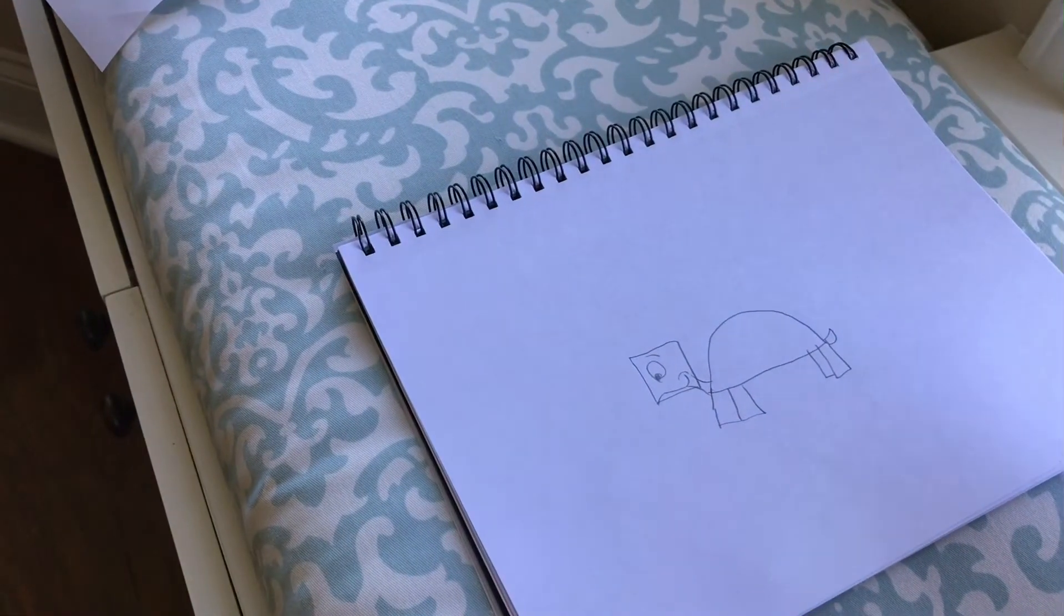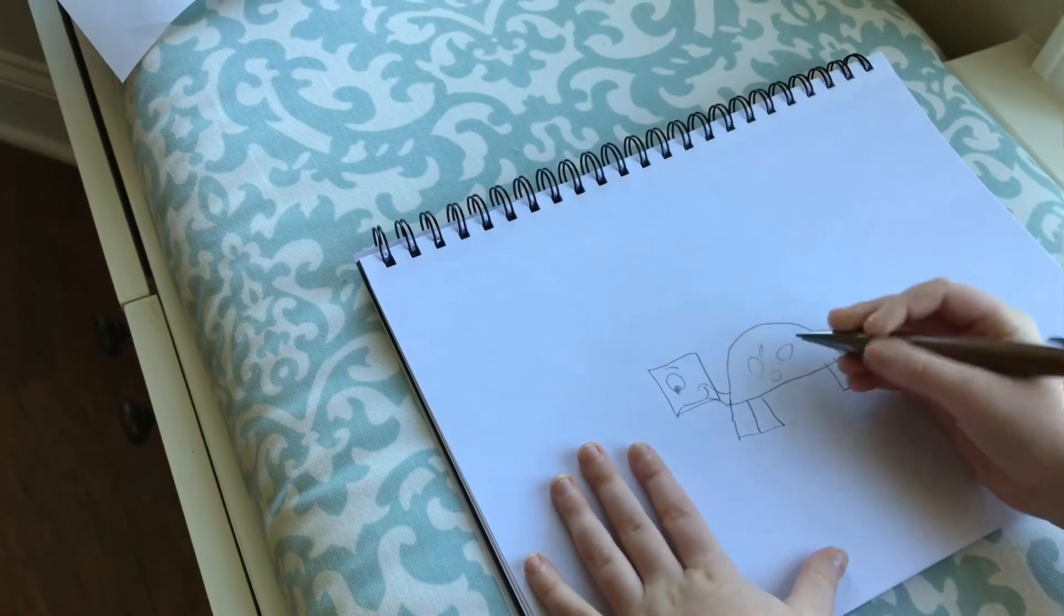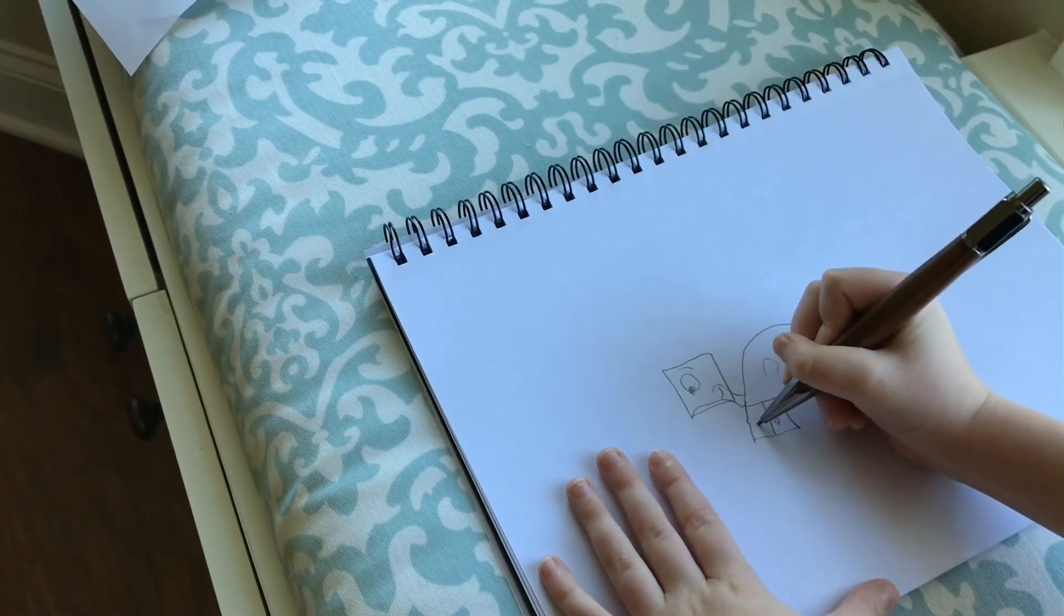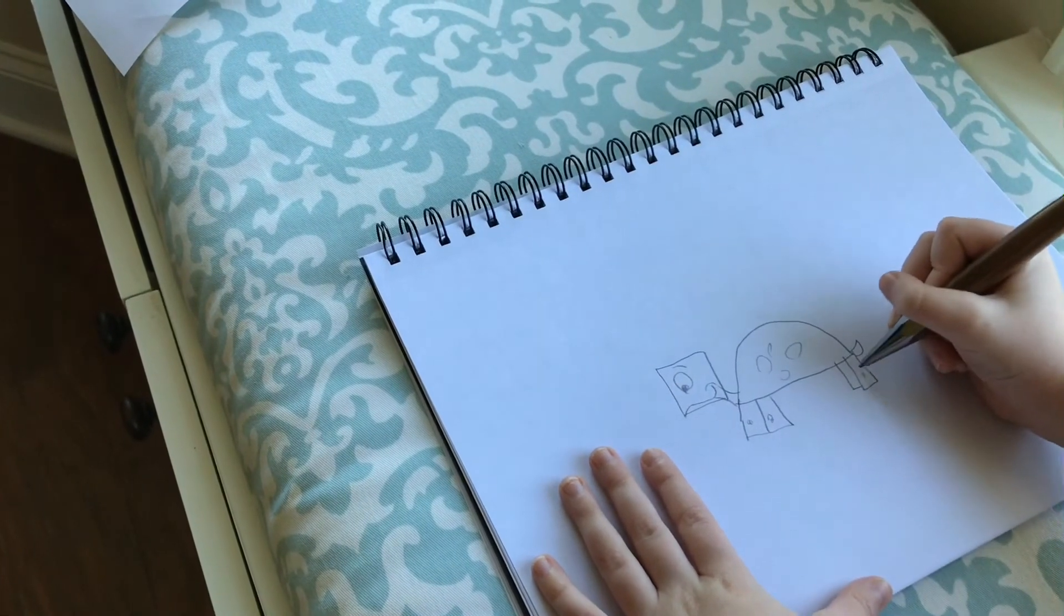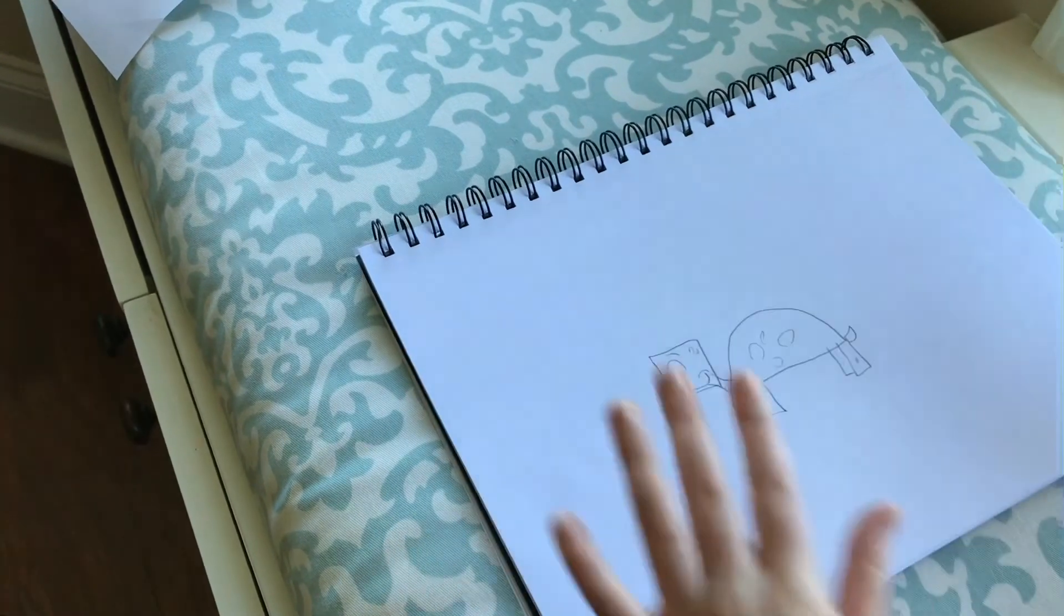So now you're gonna create even more details. Swirl, swirl, swirl, swirl. Then you can draw another little swirl down here and one right here for his kneecaps. Then you can just draw some little dots up here like that.